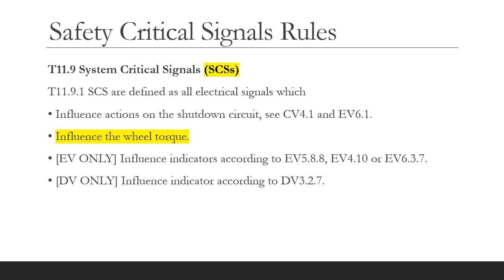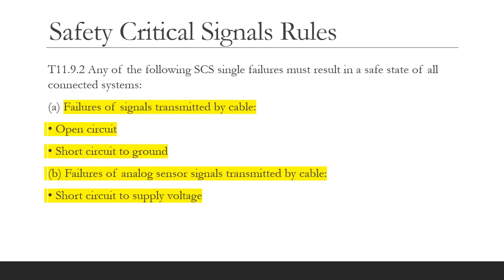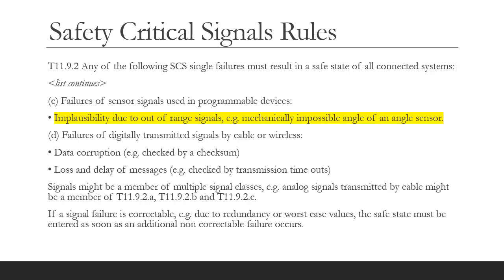It's quite obvious that the APPS is going to be safety critical because it influences wheel torque. The SCS rules tell us that we must be able to detect certain classes of signal failures: open circuit faults, short circuits to ground, short circuit to supply voltage, and any implausibility due to out-of-range signals or things that are mechanically impossible. Also covered are rules for digitally transmitted signals, which may also apply to your system.